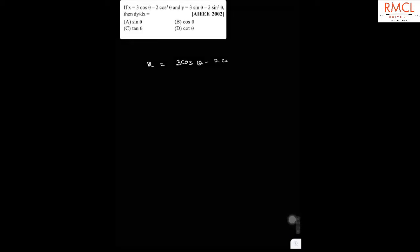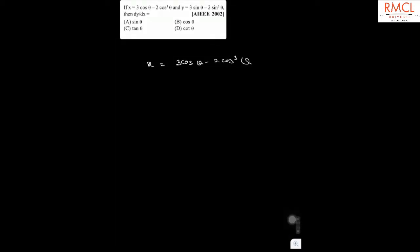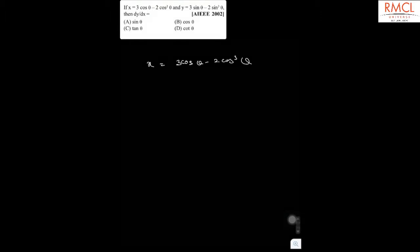Let's see this question on methods of differentiation which came in AIEEE 2002. In this question we have x equals 3 cos theta minus 2 cos cube theta, and y equals 3 sin theta minus 2 sin cube theta, and we have to find the value of dy by dx.